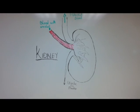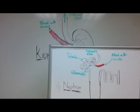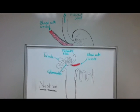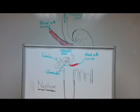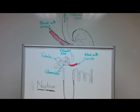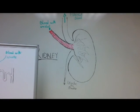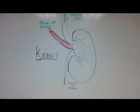Each kidney is made up of about a million filtering units called nephrons. Each nephron filters a small amount of blood. The nephron includes a filter called the glomerulus and a tubule. The glomerulus lets fluid and waste products pass through it; however, it prevents blood cells and large molecules, mostly protein, from passing.